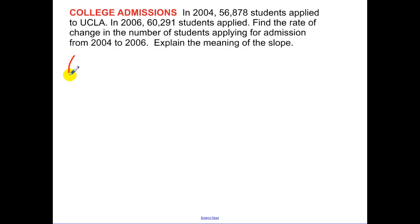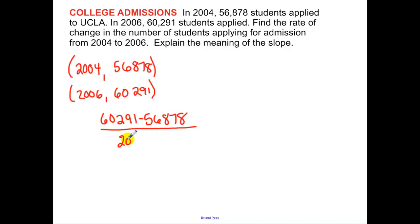So really what we have is two points. We have time, typically our independent variable. And we have our other coordinate, 60,291. Now subtract the y values over the subtracting of the x values, because that's change in y over change in x. And that is 3413 over 2. And I would let you guys use your calculator on this. And simplify, so then I divided that again in my calculator.